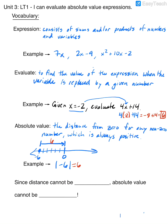Even if I gave you the absolute value of positive 6, that should also be 6 — because counting from 0 to 6 gives you 6 as well, the same way we counted for negative 6. So always keep in mind that since distance cannot be negative, absolute value cannot be negative. It's always going to be a positive number because we're finding the distance from 0.